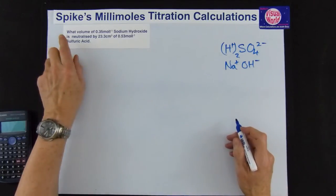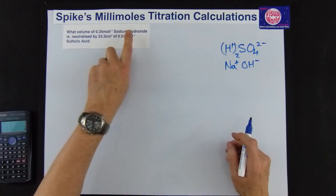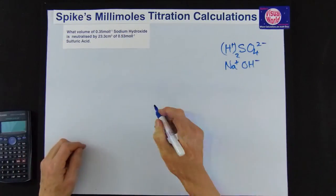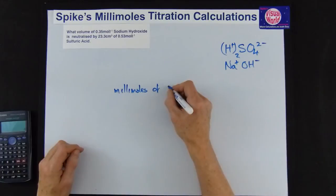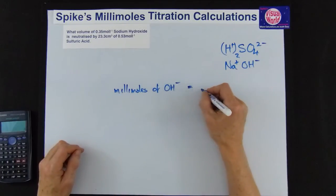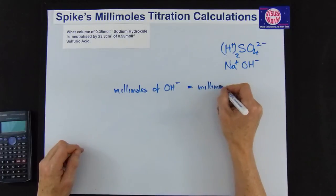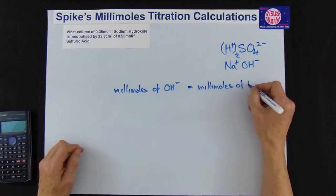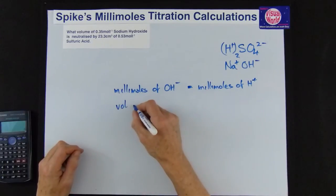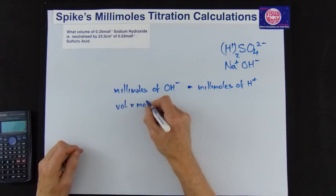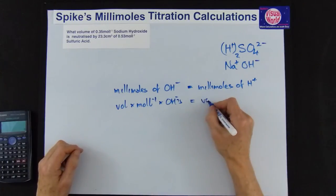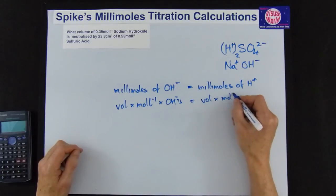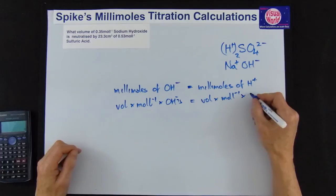This time we're looking for the alkali so we're going to start off by writing millimoles of OH⁻, this time it's got to be equal to millimoles of H+. So again use the wee words, it's far easier to remember, it's to do with your brain. Volume times moles per liter times OH⁻ equals volume times moles per liter times H+.